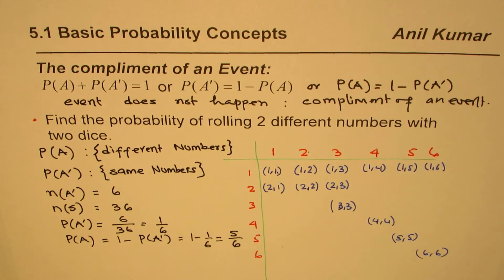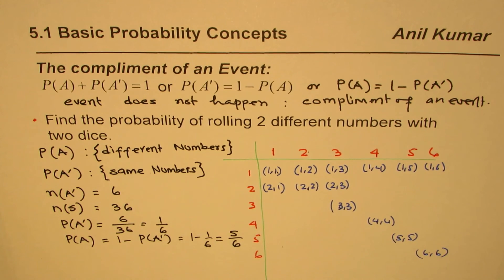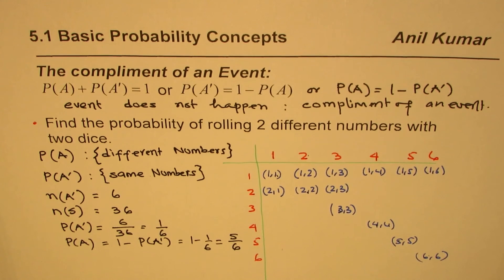Here you see how easily we found the probability of rolling two different numbers by using the complement — same numbers. That is the concept, which is very helpful in solving many probability questions. I'm Anil Kumar — you can always subscribe and share my videos. Thank you and all the best.